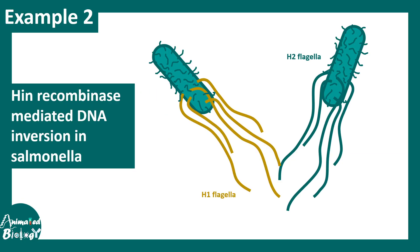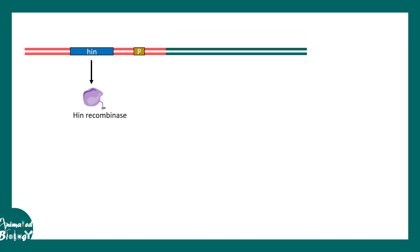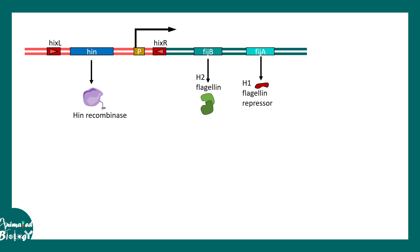Another example is hin recombinase-mediated DNA inversion in Salmonella. In Salmonella bacteria there are two kinds of flagella: H1 flagella and H2 flagella. The hin region gives rise to hin recombinase, which is capable of performing site-directed recombination. There are two important recombination sites known as hixL and hixR. A promoter adjacent to hixR controls expression of fljB and fljA genes. fljB gives rise to H2 flagellin, an important flagellar protein, and fljA gives rise to H1 flagellin repressor, which blocks expression of H1 flagellin, ensuring the bacteria would have H2 flagellin.